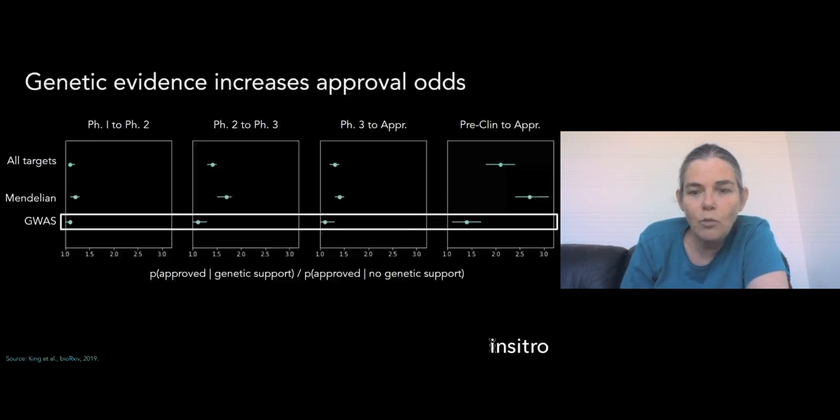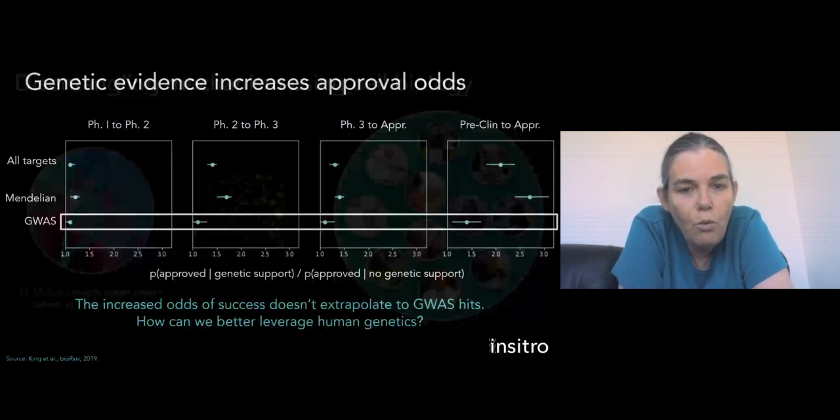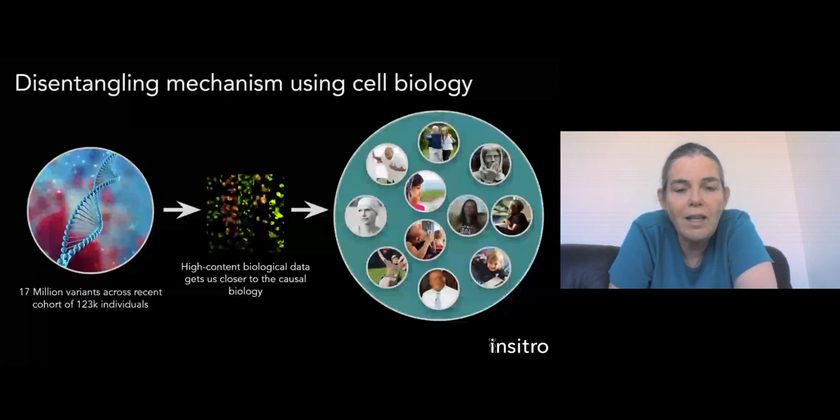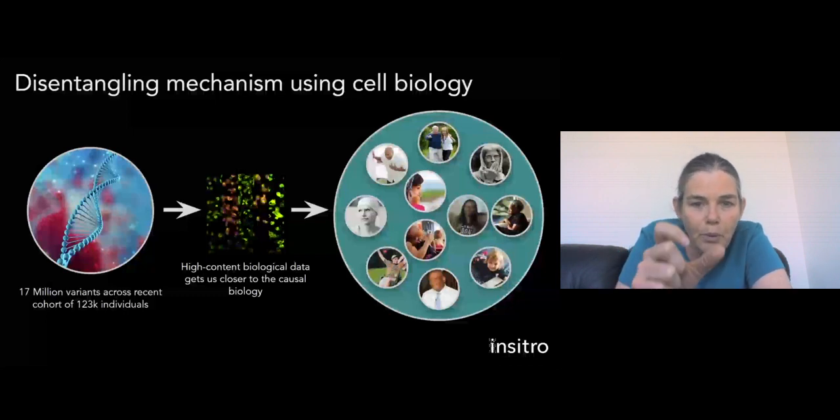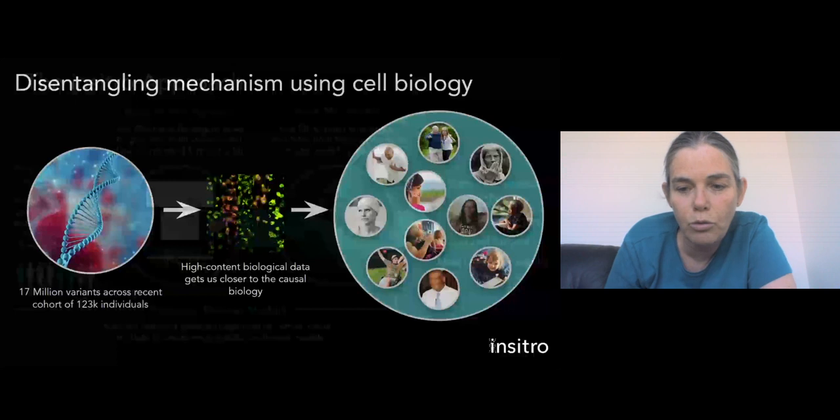So the question is, can we use human genetics in a different way in order to identify causal factors of disease? So what we hope to do here is to bring back some of these ideas that I mentioned at the beginning of this talk, which is to use our ability to generate biological data at scale to really tease apart that connection between the genetics and the human clinical outcome, and put an intermediate point that is closer to the genetics and hence the relationship is more direct, and yet speaks to human clinical outcome.